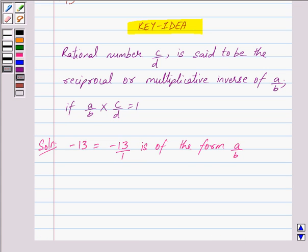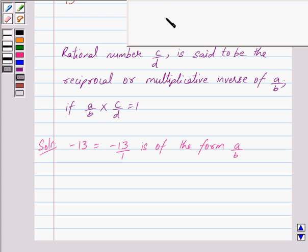Now, the multiplicative inverse of -13/1 will be such that if we multiply it by -13/1, then their product will come out to be 1. Now, clearly we can see that if we multiply 1/(-13) with -13/1, then we get their product as 1.